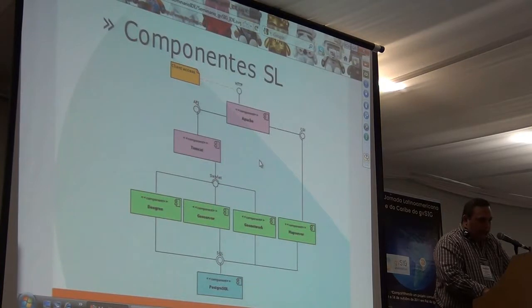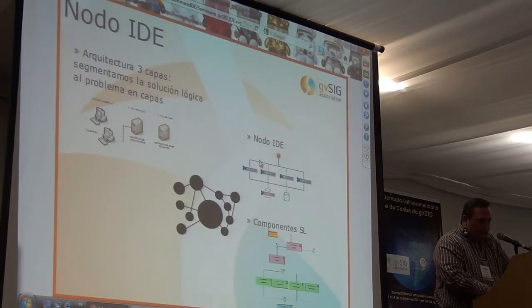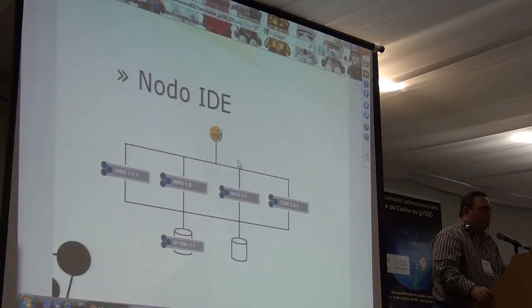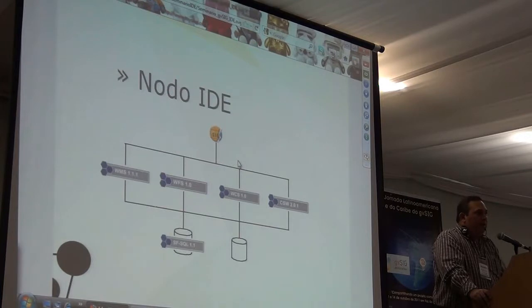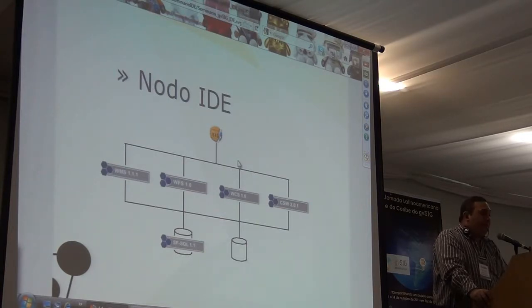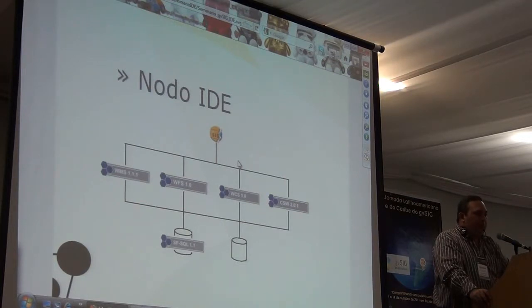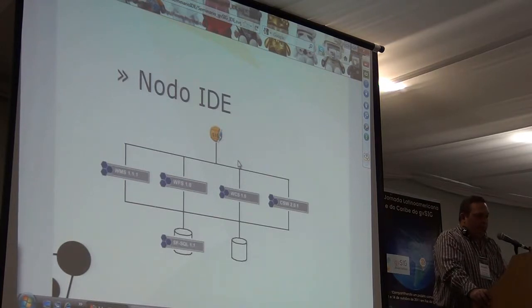A nivel de componentes, necesitamos que nuestro nodo tenga los servicios estándares: WMS, WFS, WCS de cobertura, CSW que es el estándar de metadatos, y SF/SQL que es el estándar de base de datos espacial. Habría un repositorio adicional para ficheros o rasters, y a futuro se almacenará también dentro de la base de datos. Entonces ya todo estaría bajo estándar.